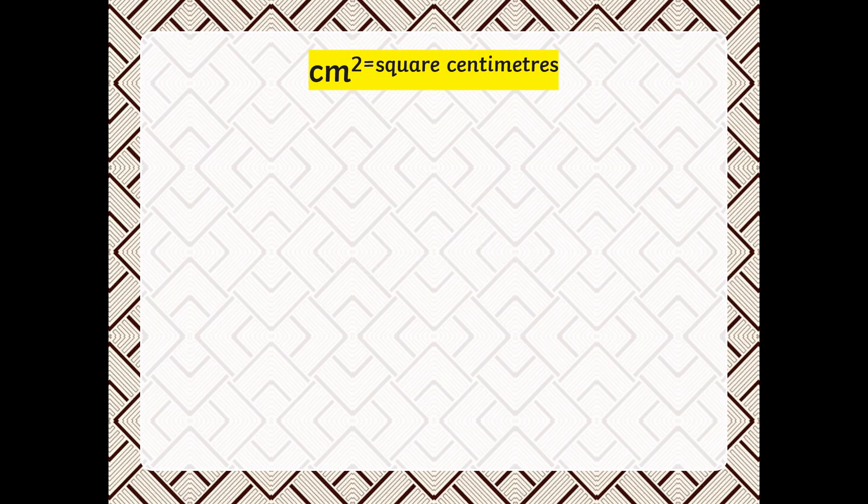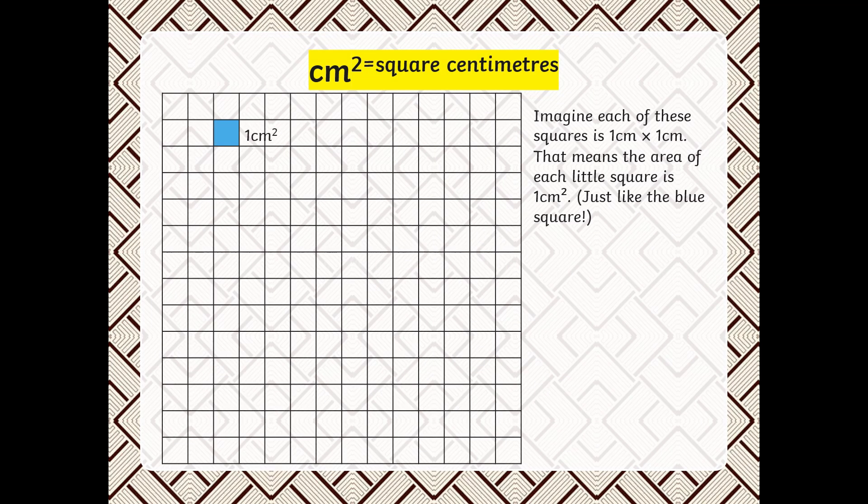Square centimeters. Imagine each of these squares is 1 centimeter by 1 centimeter. That means the area of each little square is 1 square centimeter, just like the blue square.